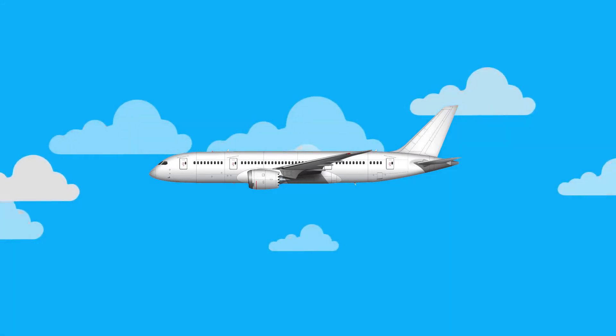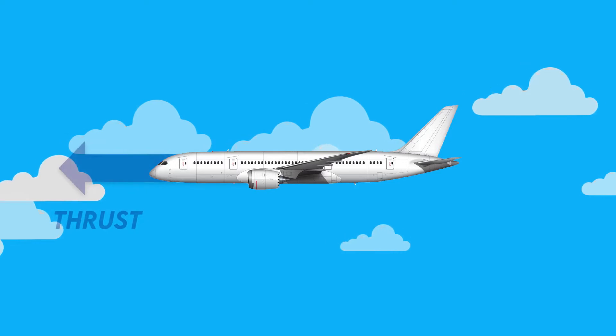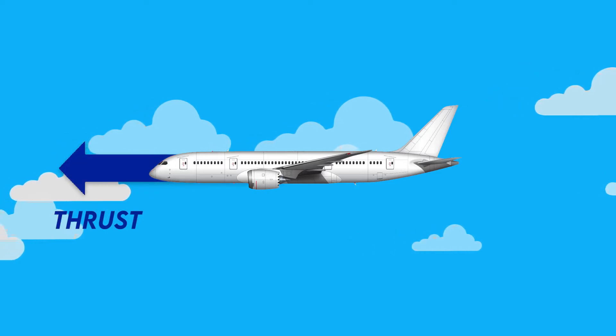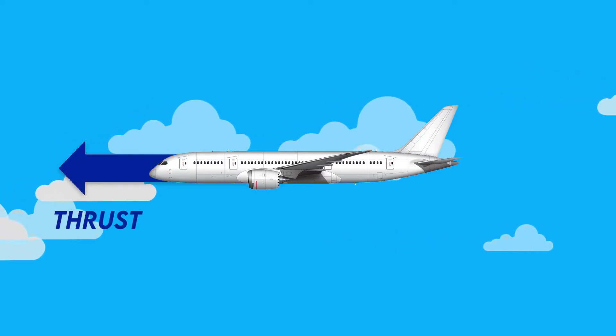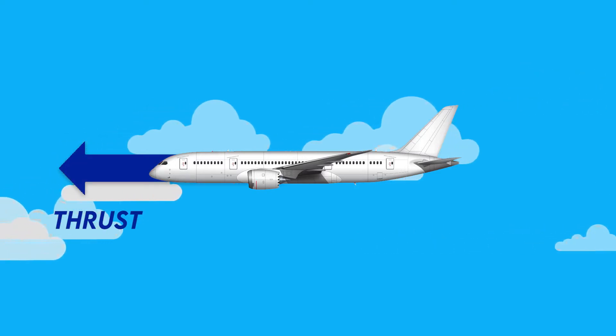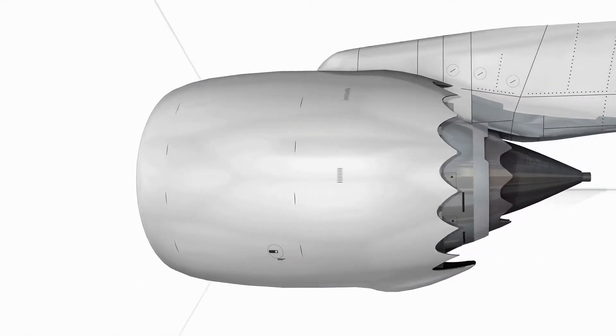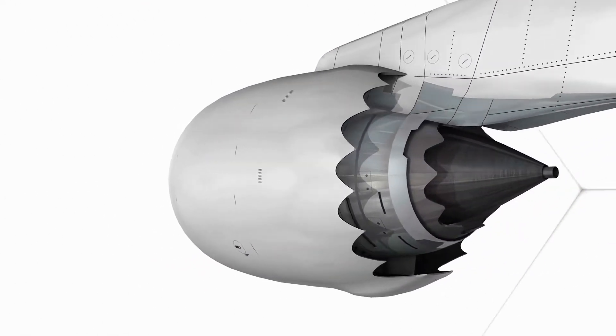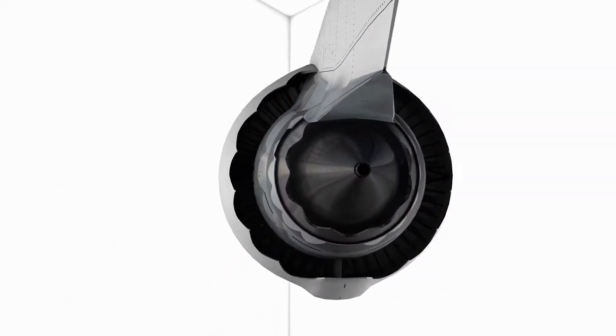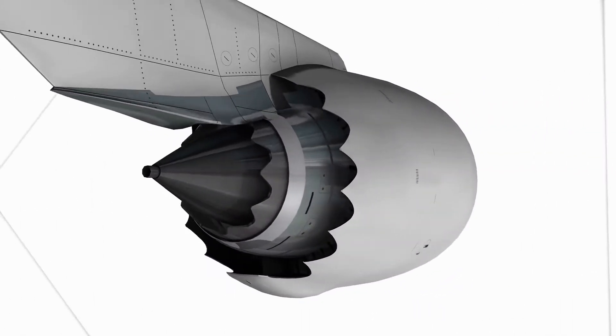The first of these four forces is thrust, which moves the aircraft in the direction of the motion. Thrust is created by the propeller of the jet engine, which pulls in air and pushes it out the rear, allowing a forward motion.